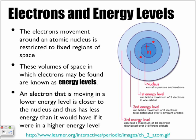As we move, remember as we said, the period number told us how many orbitals in the beginning class. Now we're going to look at the same period number, it now tells us how many energy levels there are in that atom. So these volumes of space in which electrons may be found are known as energy levels. An electron that is moving in a lower energy level is closer to the nucleus and thus has less energy than it would have if it were in the higher energy levels. The closer they are, remember we cannot move to the next energy level until the inner energy levels are completely full. And any electrons found on the outermost energy level are the valence electrons.